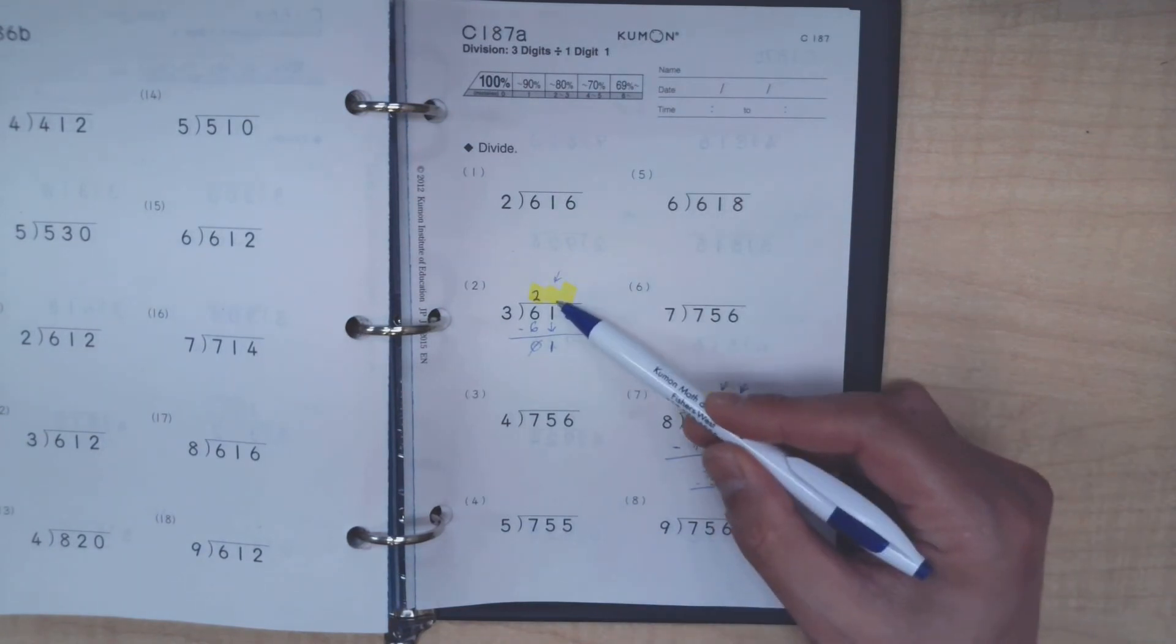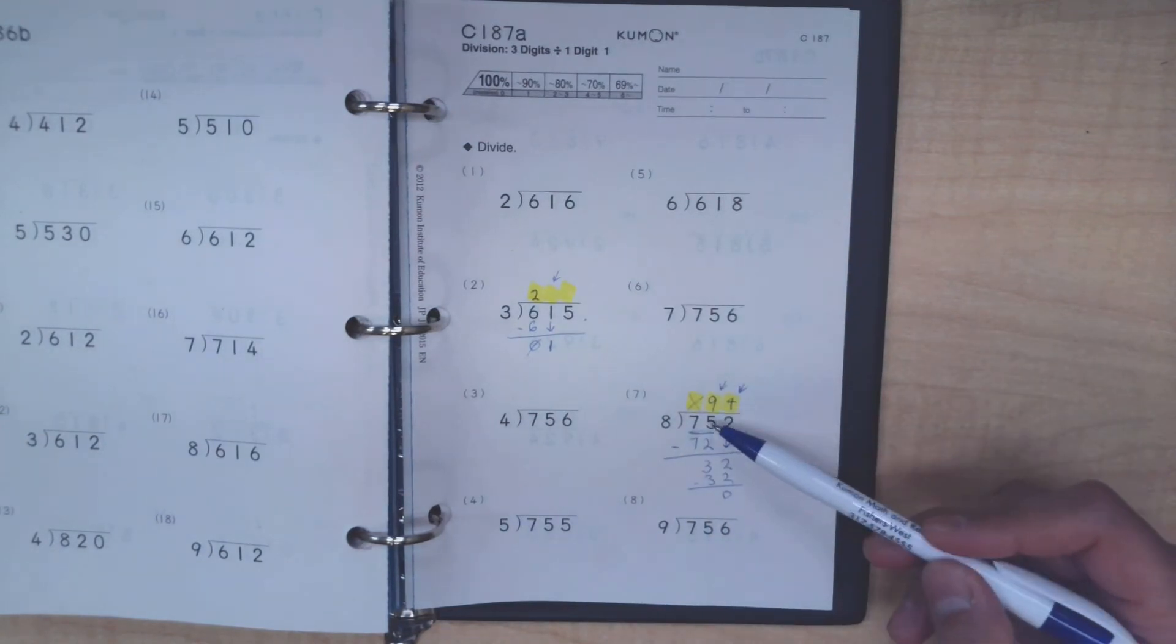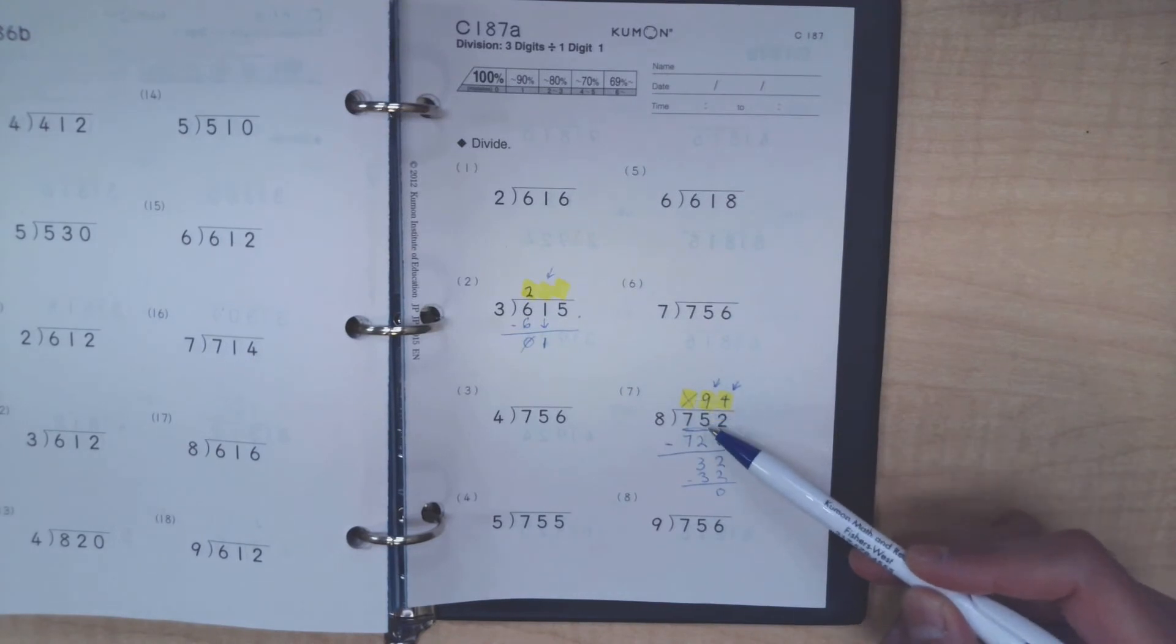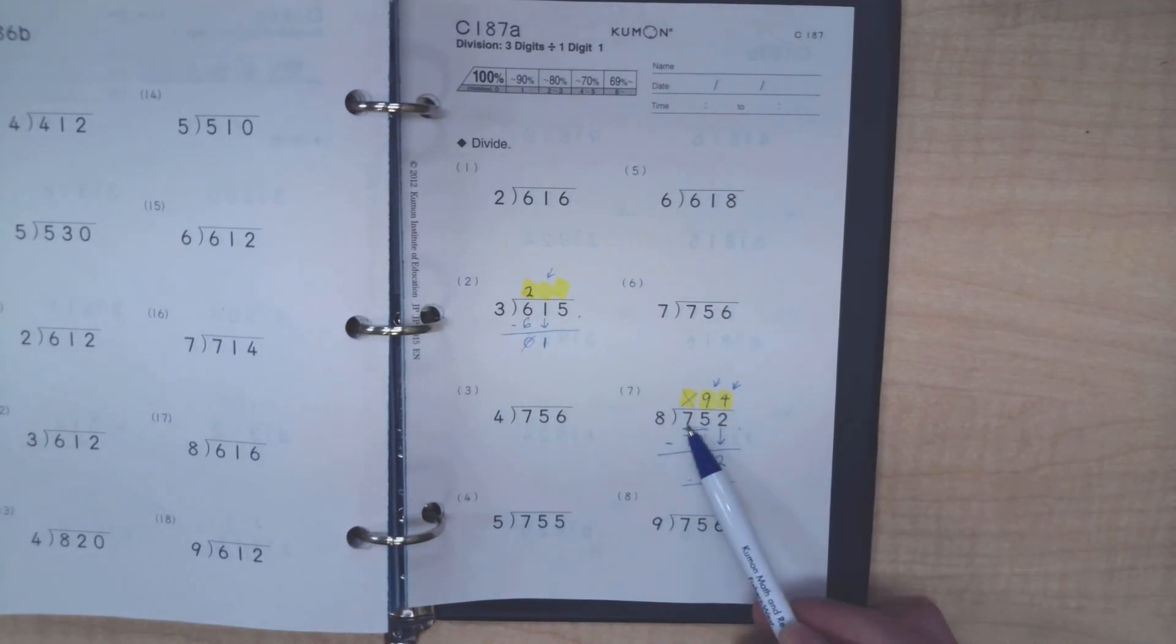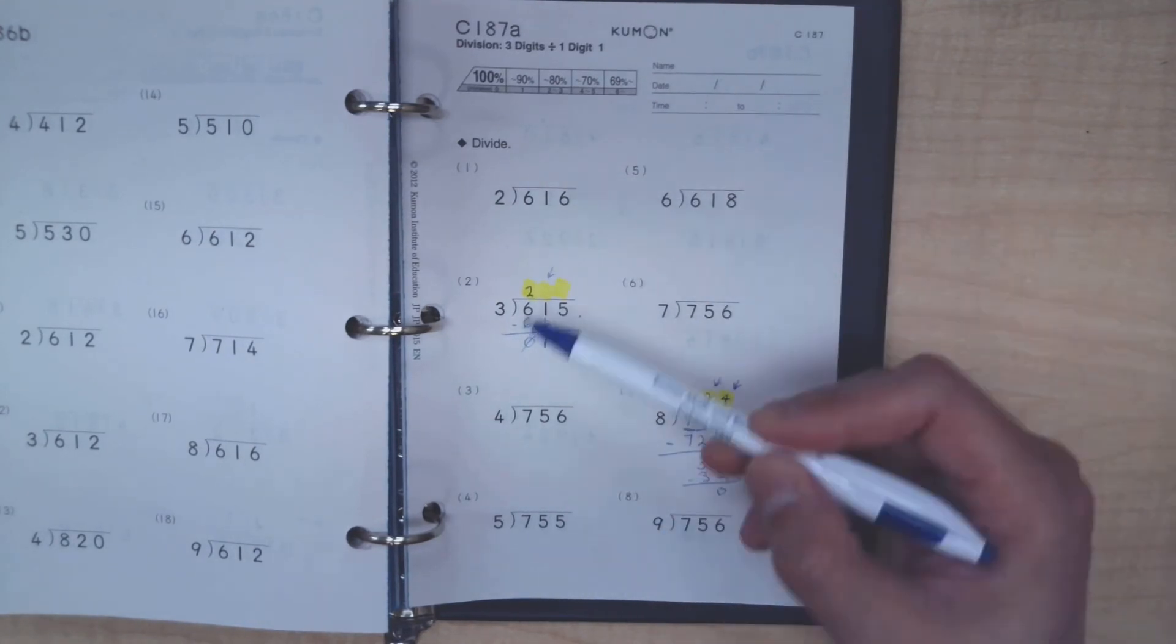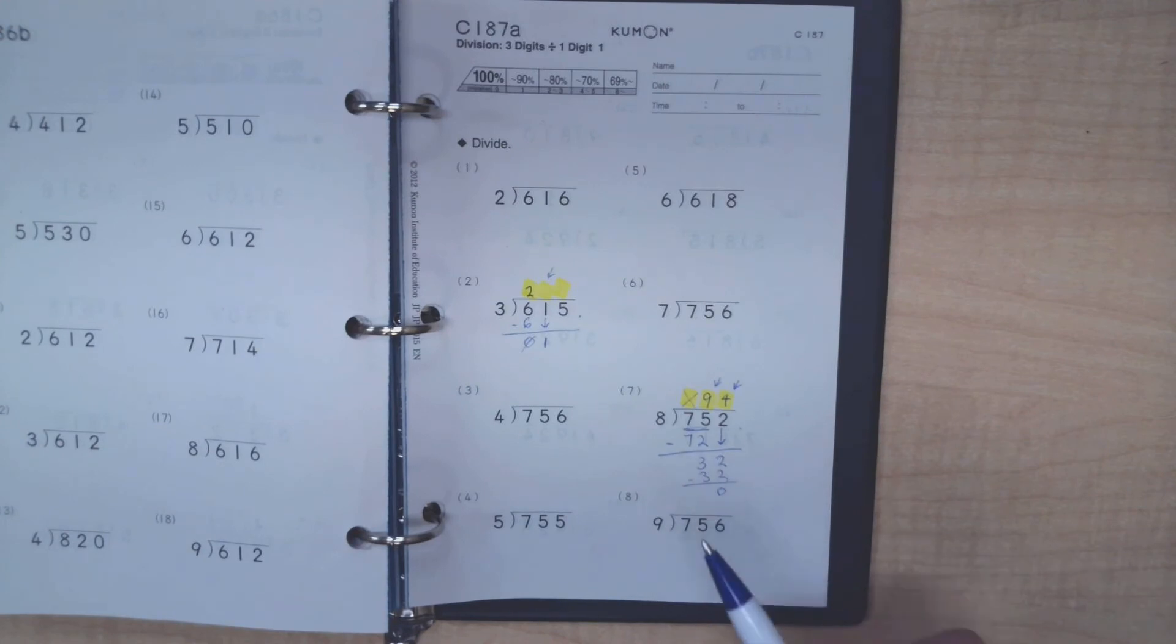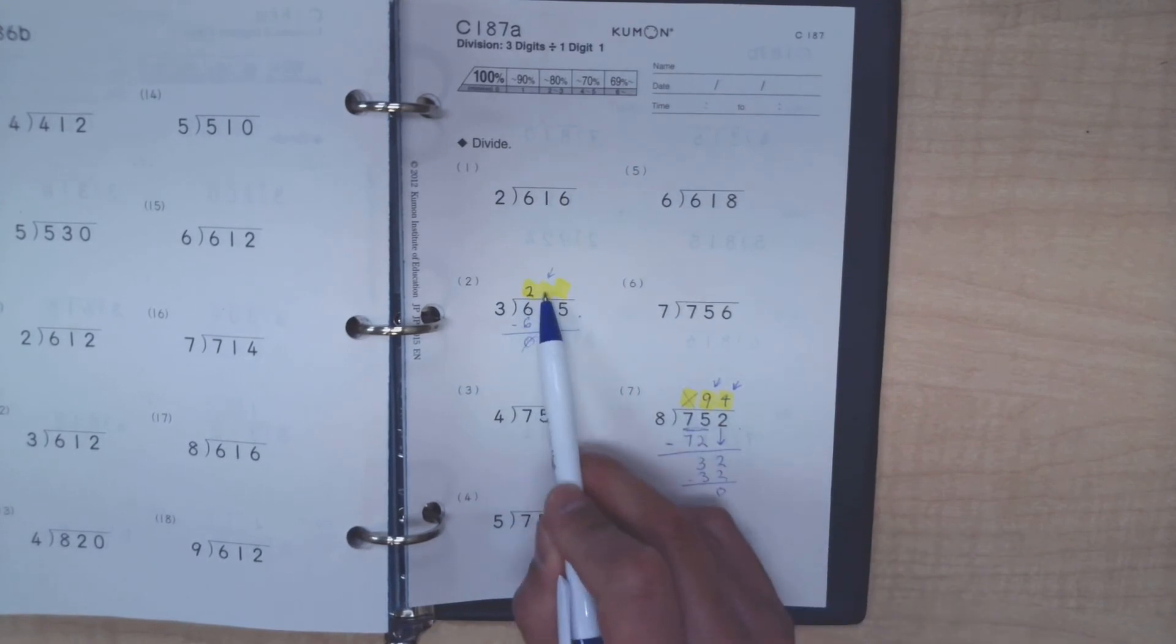Now, however, this is very different from here. For this very first place, when the division is impossible because this number is too small for the 8, we had skipped it. But in all your division problems, the only possibility of skipping a space is when and if that spot is your first spot.